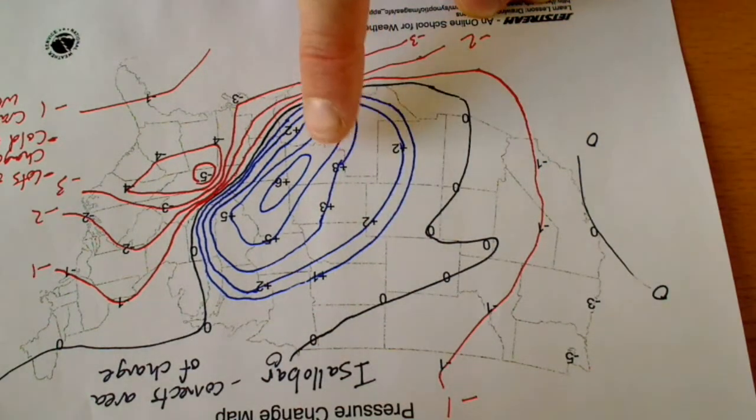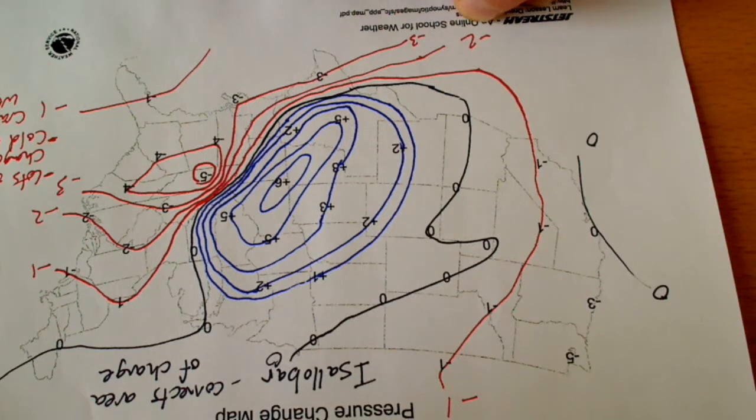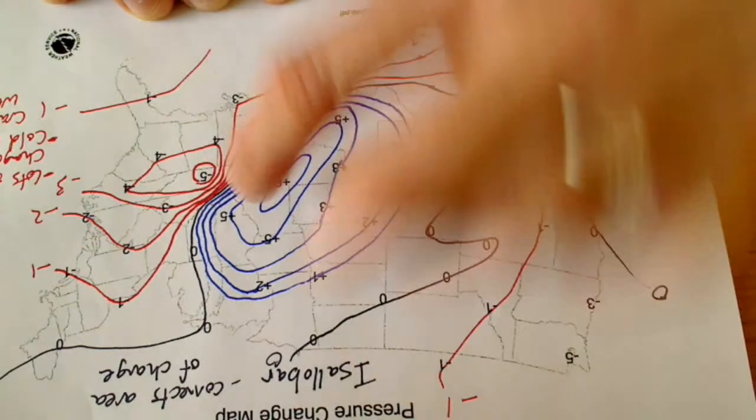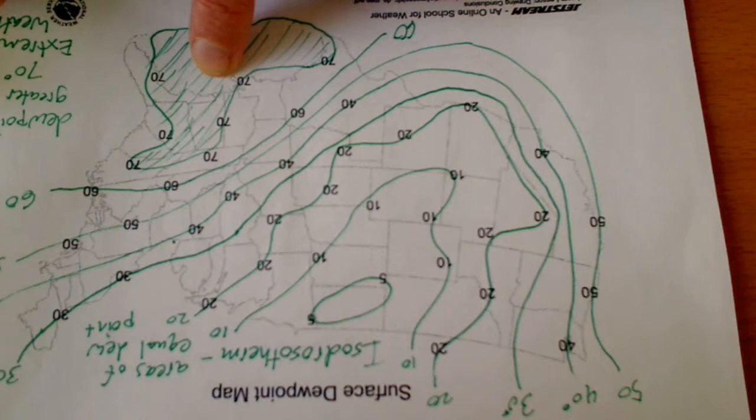The pressure is more stable. This is an area of cold continental polar air from Canada pushing into this more moist air. And that's what's creating thunderstorms. That's what's making this area very unstable.